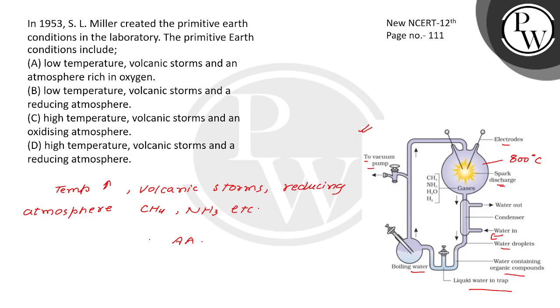But when we talk about the Stanley Miller experiment, what did they see? Amino acid formation and similar conditions maintained in the lab like primitive earth. So now, primitive earth conditions included - low temperature? It was not low temperature. High temperature it was on primitive earth. This is incorrect.